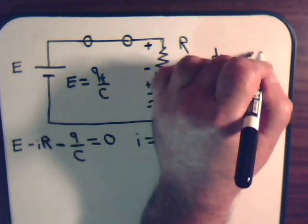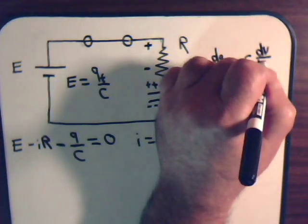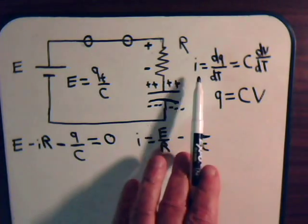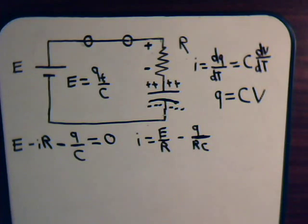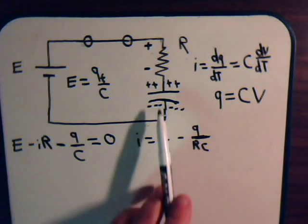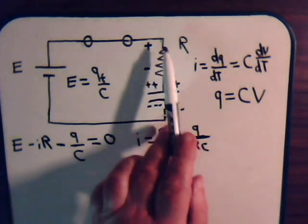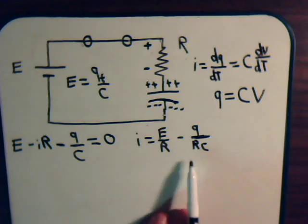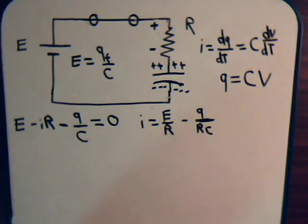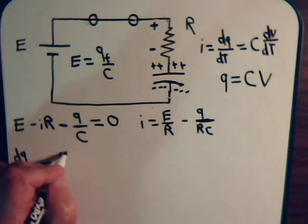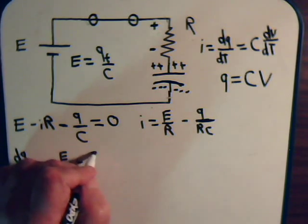The capacitor current can also be written as C dV/dt. Since this is a series circuit, the current has to be the same everywhere. When we say capacitor current, we are not implying current goes across the plates — electrons accumulate on one plate and are repelled off the upper plate, which then go to the battery terminal, so it behaves like a complete circuit. We write the equation not with I but with dQ/dt, giving us dQ/dt equals E over R minus Q over RC.